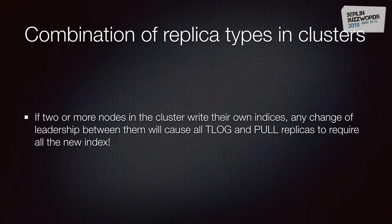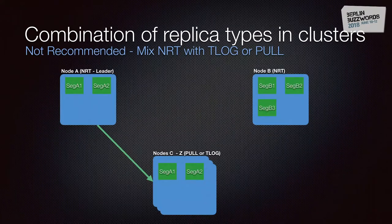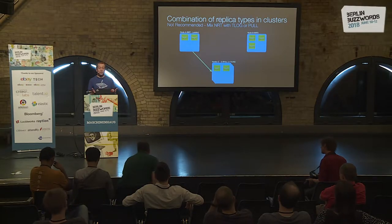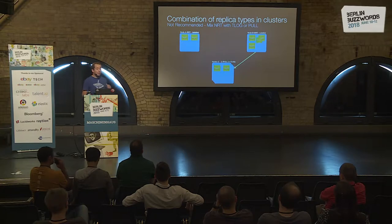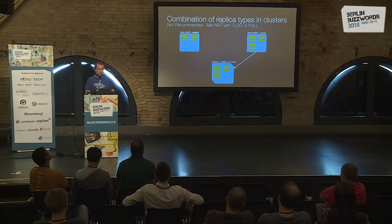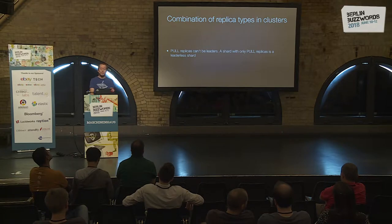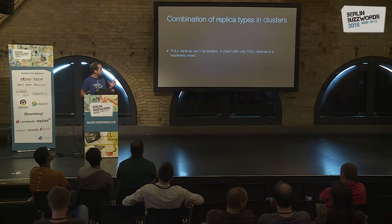Two unsupported or unrecommended combinations are mixing NRT with TLOG or pull replicas, and all-pull replicas. Mixing NRT with pull or TLOG worsens the recovery issue — if a leader changes, all pool or TLOG replicas will download the full index on the next replication phase. And all-pull replicas is not supported at all: since pull replicas cannot be leaders, you'd have a leaderless shard, and Solr will complain if you try to create it.